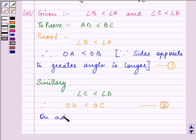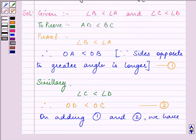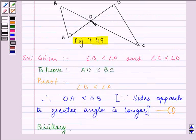On adding equations 1 and 2, we have OA plus OD is less than OB plus OC. Now as we can see, OA plus OD will give us AD and OB plus OC will give us BC.